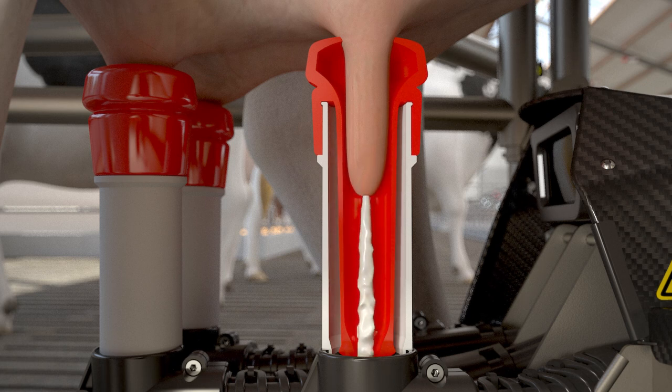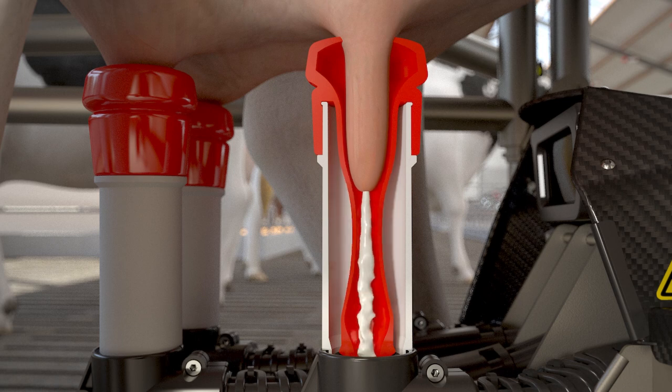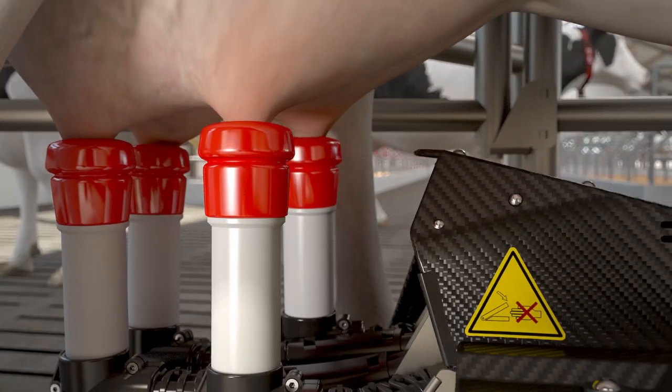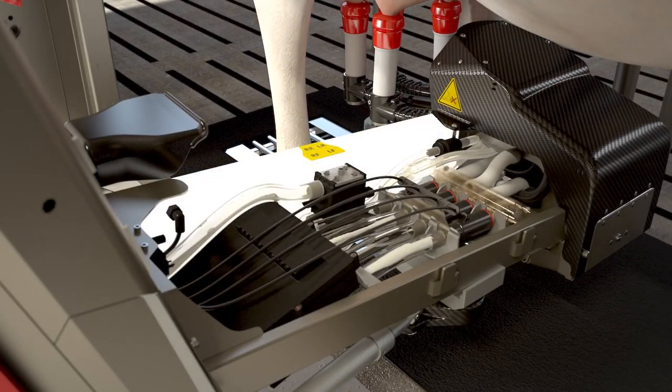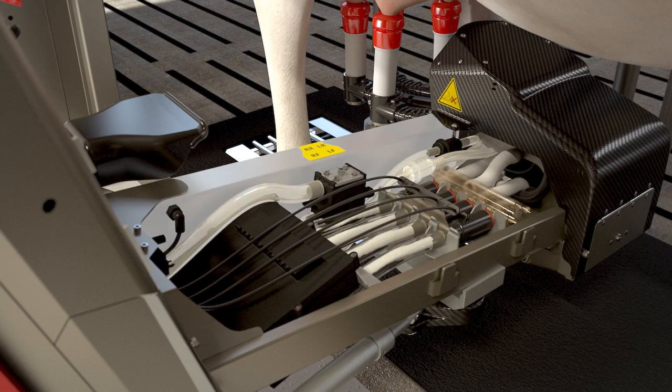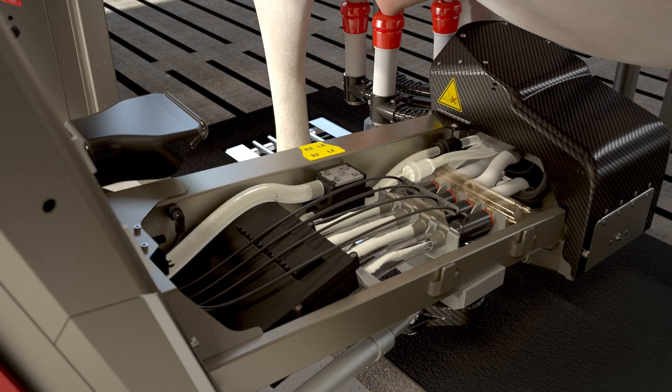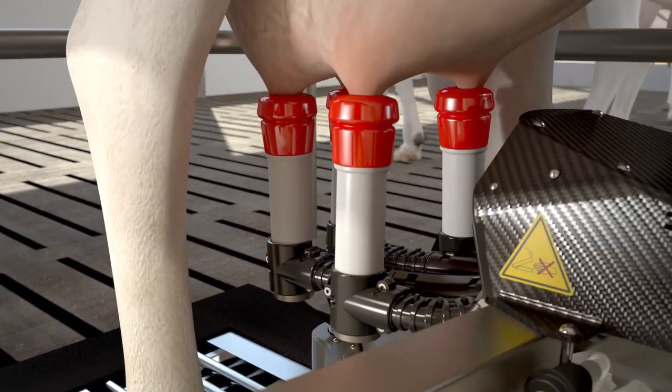The milk vacuum transports the milk to the milk glass. For healthy udders, it is important that the vacuum pressure under the teat point remains stable. This is why the astronaut comes replete with a vacuum buffer. This ensures that the pulsation vacuum does not interfere with the milk vacuum. This guarantees a constant flow of milk.